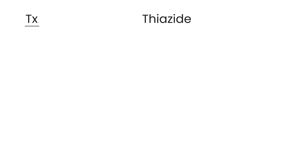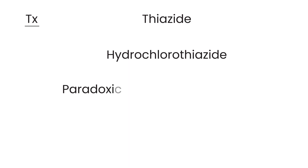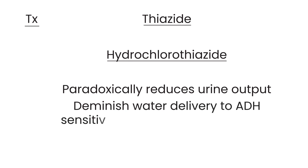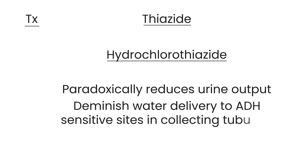Since ADH is not useful in NDI, treatment involves a thiazide diuretic — most commonly hydrochlorothiazide. This has a paradoxical effect: it paradoxically reduces urine output, the opposite of what a diuretic normally does. It works by diminishing water delivery to the ADH-sensitive sites in the collecting tubules. The patient is also placed on a low-salt diet to allow more water to return to the bloodstream and reduce urine water loss.